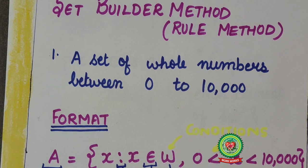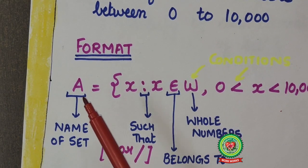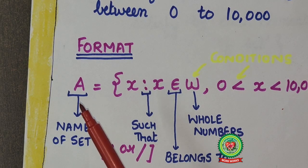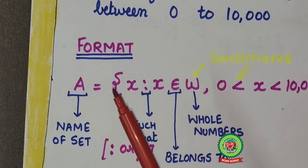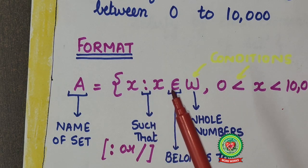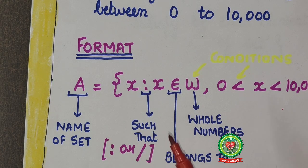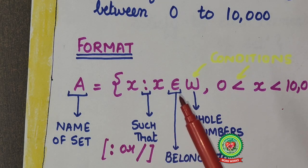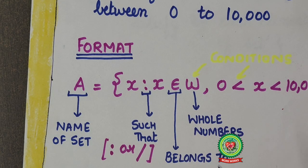So what is the format to write in set builder form? Here first of all I will write name of the set. Here I have given name capital A. Start with the curly bracket. First we will write x such that x. This symbol represents such that, or we can also use this symbol to write such that. Here then we will write this symbol that means belongs to. Then we will write W. Here W stands for whole numbers.